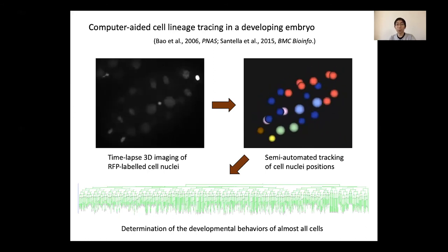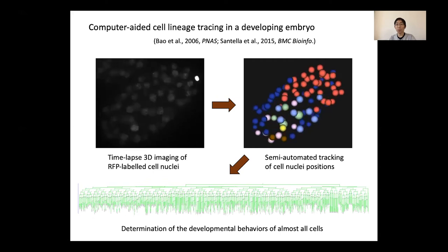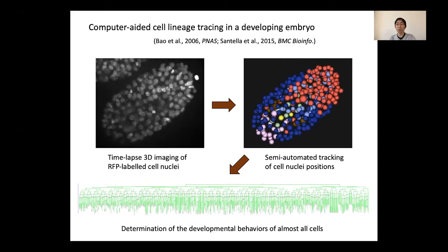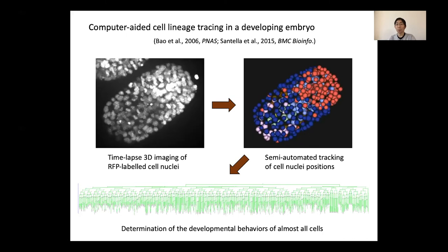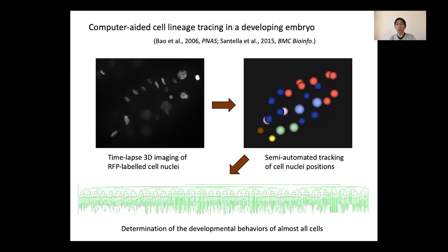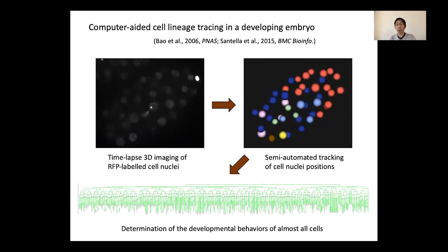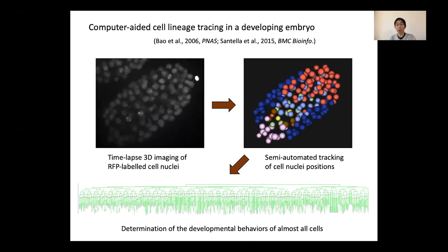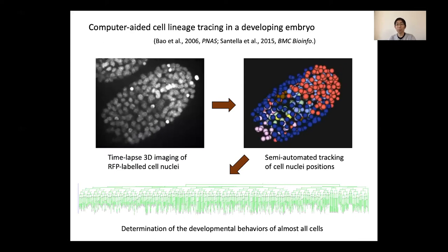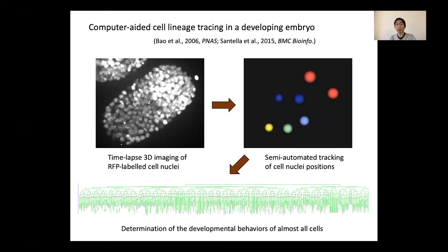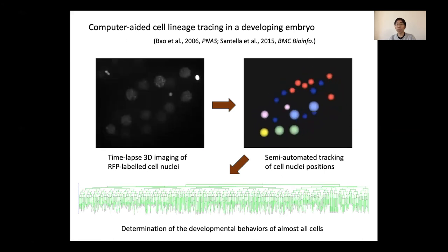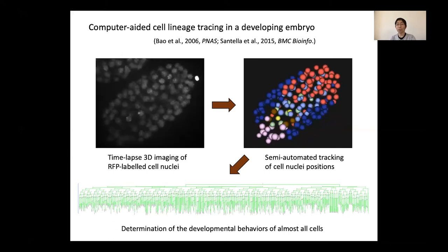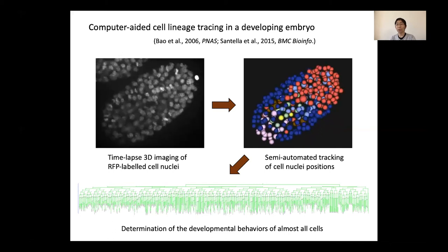We first imaged fluorescently labeled cell nuclei every minute with time-lapse 3D imaging, and then we determined the divisions and movement of almost all cells during embryogenesis using computer programs developed by our lab. Using this system, we analyzed developmental changes in embryogenesis under various environmental conditions.